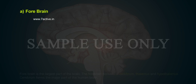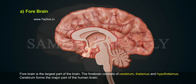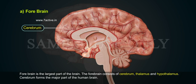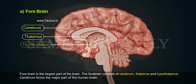Forebrain is the largest part of the brain. The forebrain consists of cerebrum, thalamus and hypothalamus.